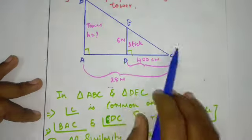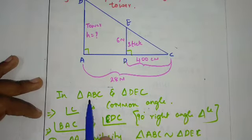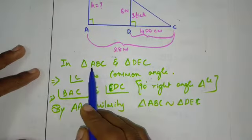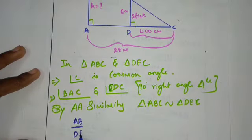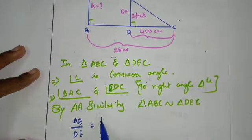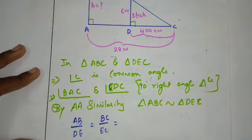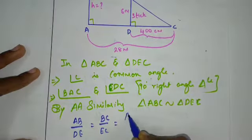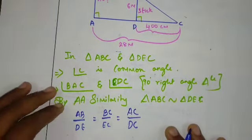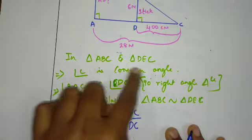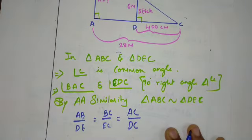Now you can see the diagram directly. In triangles ABC and DEC, AB divided by DE equals BC divided by EC equals AC divided by DC. This is easy once you see the diagram.